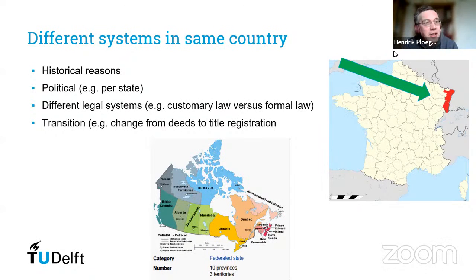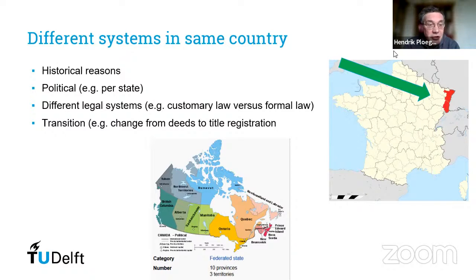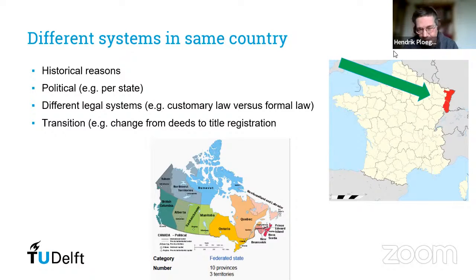There can also be a political reason. Canada is an example, but also India, where land law and administration is not a task of the central government but is dealt with per state, and each state can make its own decision based on historical reasons. The third reason is different legal systems coexisting, as in Indonesia: on one hand the adat law, customary law, versus the formal law of the civil code — two systems next to each other.